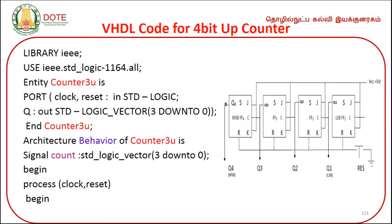So now, for this model, the assignment given is a 4-bit up counter. For an asynchronous up counter, we know that first, for every flip-flop, we give a clock pulse; the output of each flip-flop becomes the clock input for the next one. This is the first flip-flop, second flip-flop, third flip-flop, and fourth flip-flop.